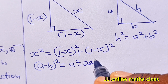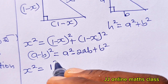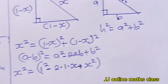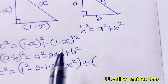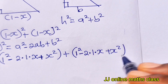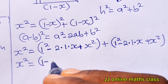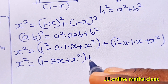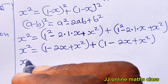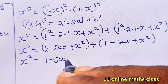Now remember that (a − b)² = a² − 2ab + b². So we expand: x² = 1² − 2(1)(x) + x² + 1² − 2(1)(x) + x². Simplifying, x² = 1 − 2x + x² + 1 − 2x + x².